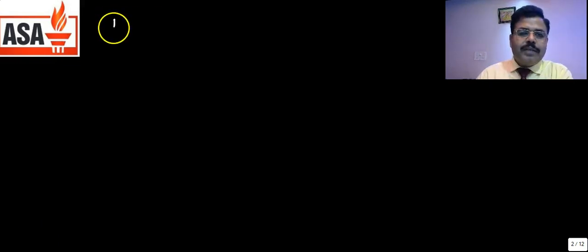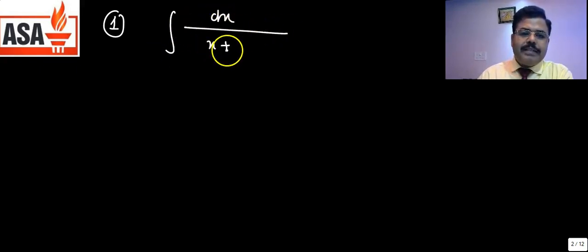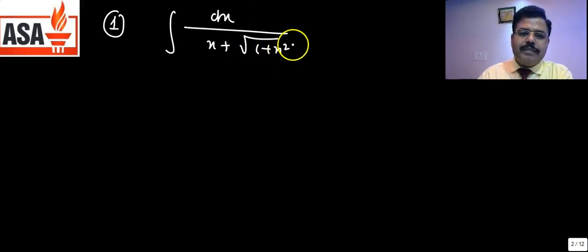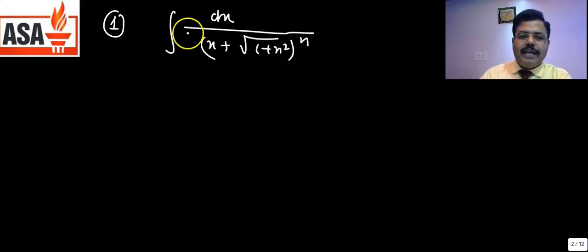The first question for today is: integration of dx upon (x + √(1+x²))^n. Here a² = 1, so a = 1.